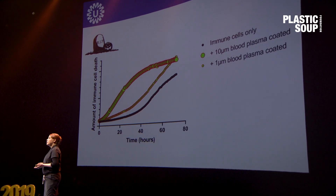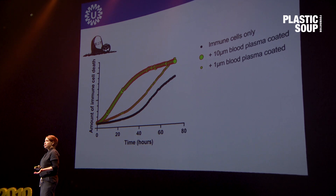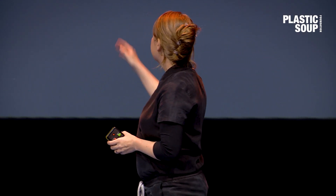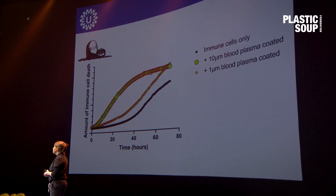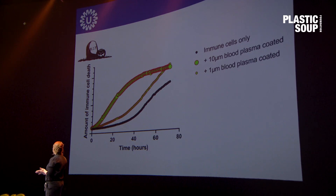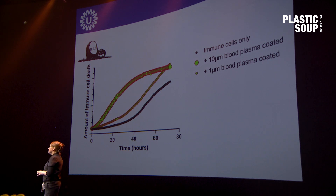We also did the same experiment with another experimental setup to see if we could confirm this increased cell death using a different method. Indeed, in the black line — immune cells only — you can see how long a normal immune cell lives. On the horizontal axis we have time, and on the vertical axis we have the amount of cell death. Focusing on the 20-hour time point, you can see that immune cells only have hardly died. But in the case of the 10 micrometer blood plasma coated line, many of the immune cells had already died.